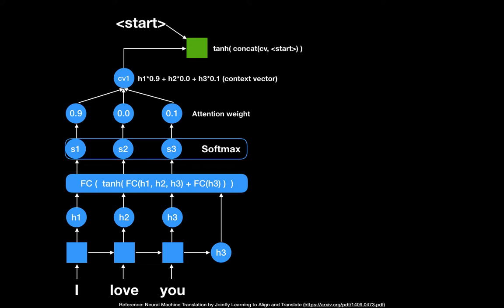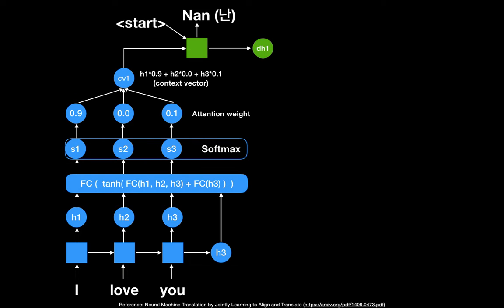From the attention weights we compute the first contextualized vector: h1 times 0.9 plus h2 times 0.0 plus h3 times 0.1. This highlights 'I' with 90% attention and 'you' with 10%, ignoring 'love.' This contextualized vector is fed into the first decoder RNN cell along with the start token as input.